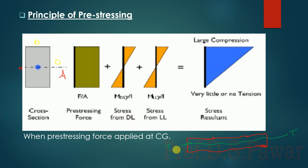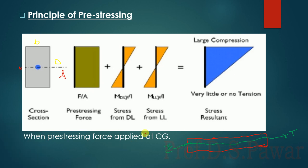Now, if you are going to first apply the force to the tendon, we are going to stretch the tendon. After stretching the tendon, we are going to cut the tendon. After cutting, the reverse action happens and the force acts on the beam. So this is P — if you consider this as P.